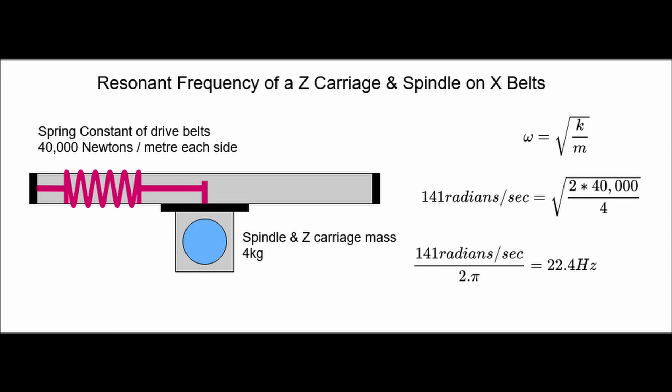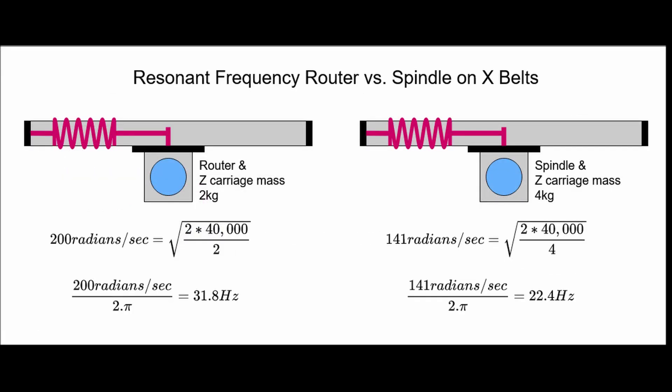To try to improve this performance we might add mass, say a water-cooled spindle instead of a trim router. Unfortunately the outcome is more complex. The additional mass does lower the resonant frequency, but it increases the amplitude when resonance does occur. However at higher frequencies above the resonance it will reduce the amplitude of the vibrations.